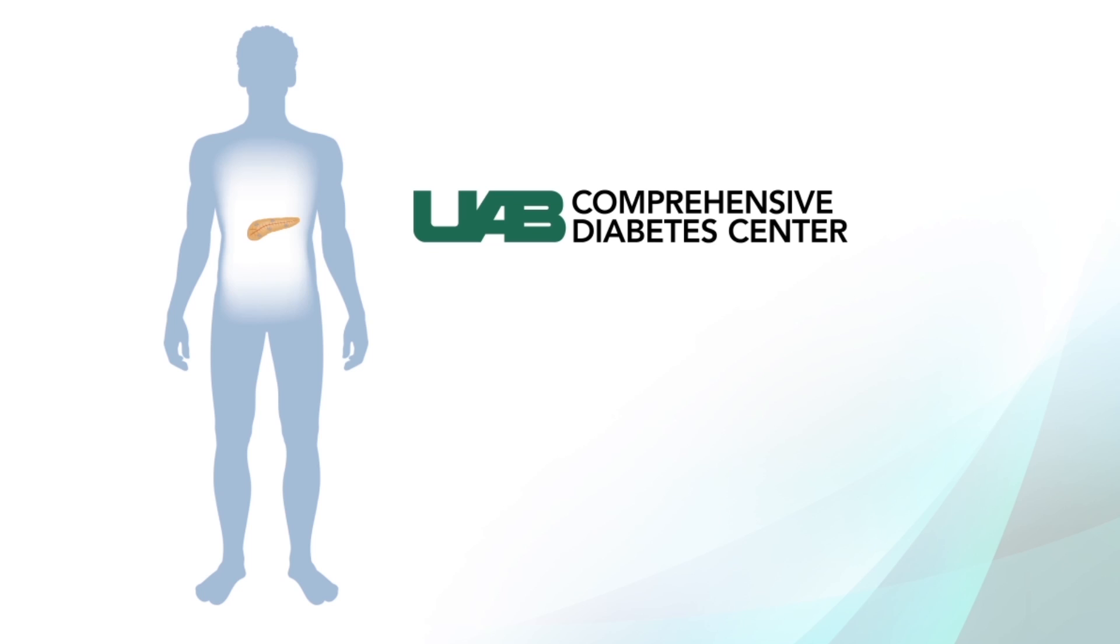Now the UAB Comprehensive Diabetes Center is launching the first human trial of verapamil to treat type 1 diabetes. If it is successful, verapamil would represent the first therapy to enhance a patient's own natural beta cell mass and insulin production.